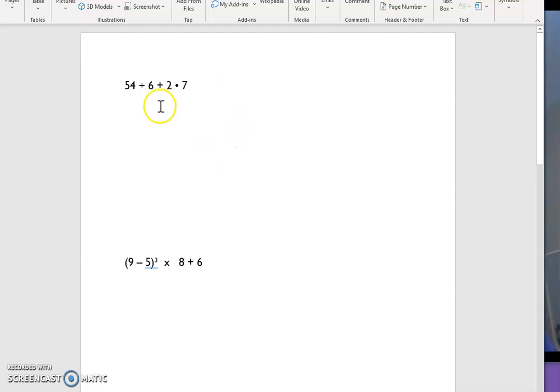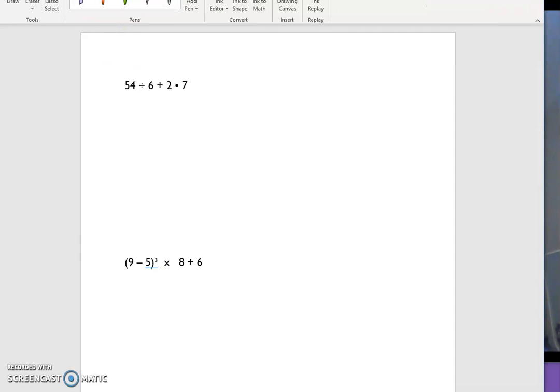In this first example, we have division, addition, and multiplication. I'm going to eliminate the addition as my first step because it is not as powerful as dividing or multiplying. So then I'm deciding between should I divide first or should I multiply first? Because the division is first in the problem, I'm going to do this division step first. So I would divide 54 by 6, which would give me 9.